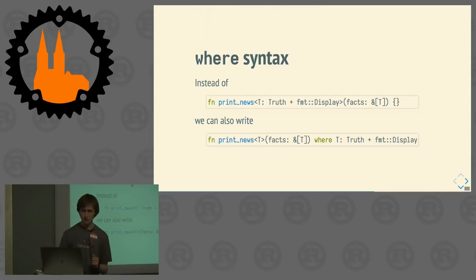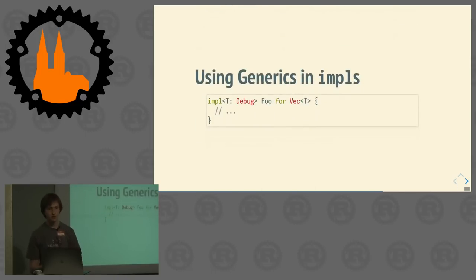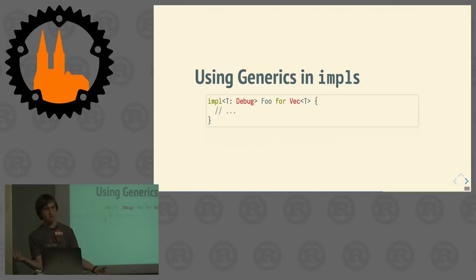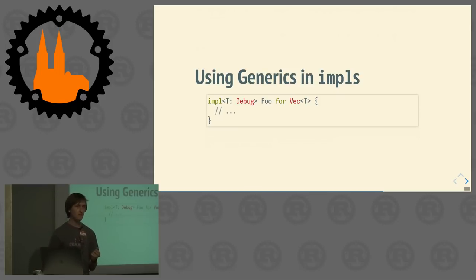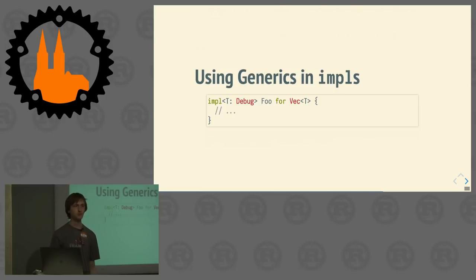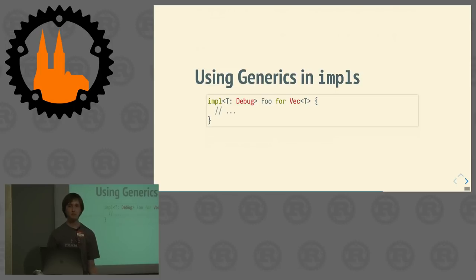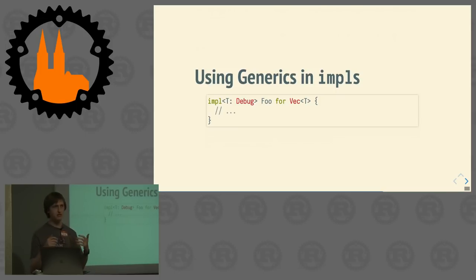Talking of syntax, we can also add placeholders in other places — for example, in our implementation block. We can say we want to implement this trait for this type, but with a placeholder in the type as well. This implementation block is valid for all Vecs where the items implement the Debug trait. Debug is basically the human-debuggable or machine-readable version of the Display trait.